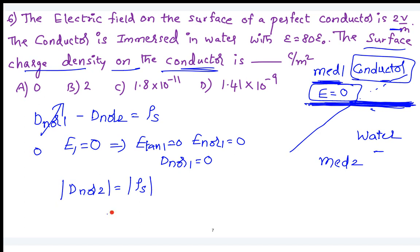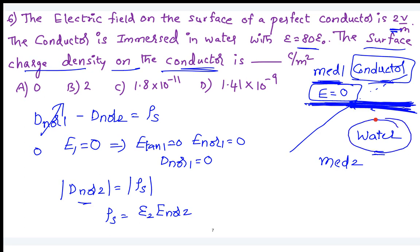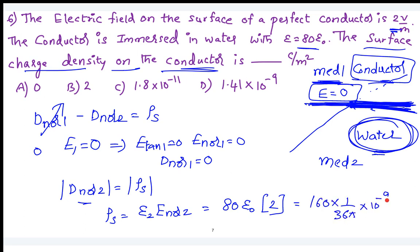So rho_s equals D_normal2. The water permittivity is 80 times epsilon_naught. So D_normal2 equals epsilon_2 into E_normal2. All values are given: the 2 V/m is in medium 2 since the conductor does not allow the field. So epsilon_2 equals 80 epsilon_naught, giving 80 epsilon_naught times 2 = 160 times (1/36π) times 10^-9 coulombs per meter square.